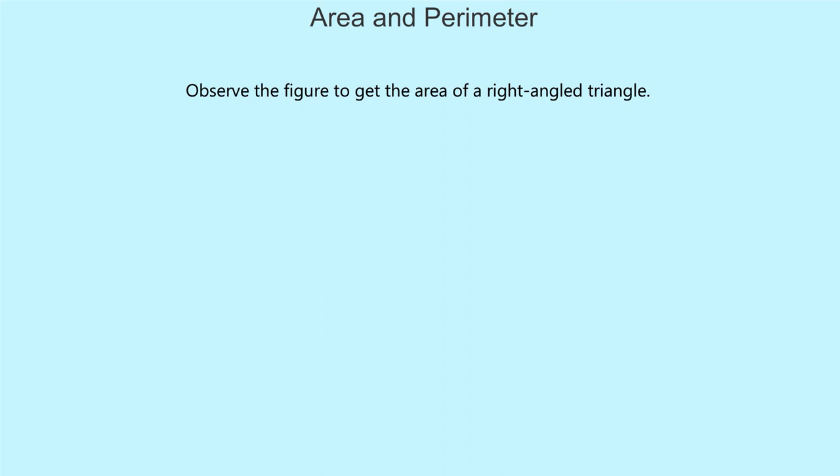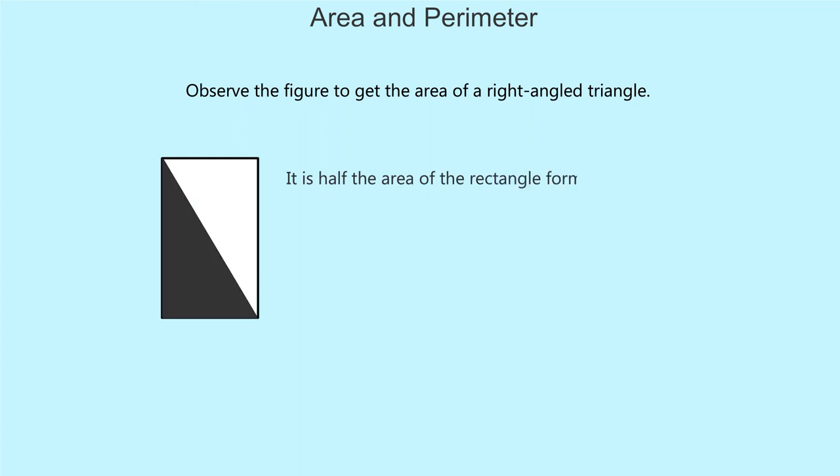Observe the figure to get the area of a right-angled triangle. It is half the area of the rectangle formed by matching the diagonal. The area is half into base into height.